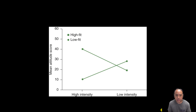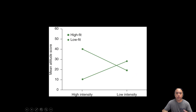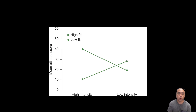The best way to describe this is using an example. I've got a sample of adult recreational athletes, and what we're measuring is their attitude towards exercise. We want to know what the influence of intensity is on attitude between low-fit and high-fit individuals. You can see that the low-fit group responds favorably to low-intensity exercise — their mean attitude score increases from high to low intensity — whereas the high-fit group shows the exact opposite, with their mean attitude score decreasing as they go from high to low intensity.